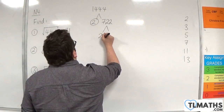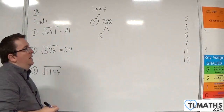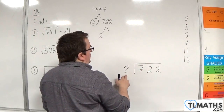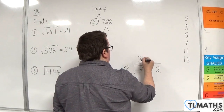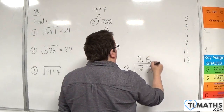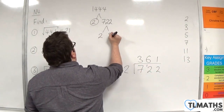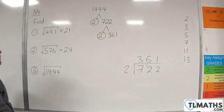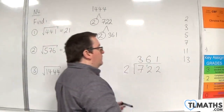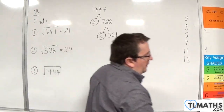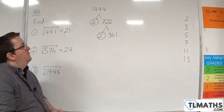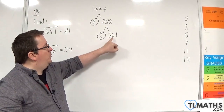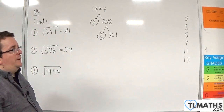Now 2 will definitely go into 722. 722 divided by 2: 2s into 7 go 3 with remainder 1, 2s into 12 go 6, and 2s into 2 go 1. So we get 361. Now 361 — that's awkward because 2 doesn't go into 361. And 3 isn't going to go in because 3 plus 6 plus 1 is 10, which is not divisible by 3.